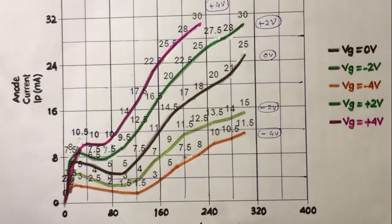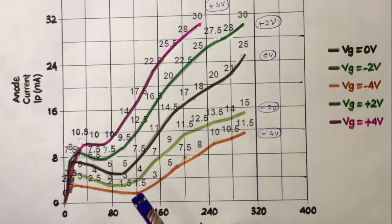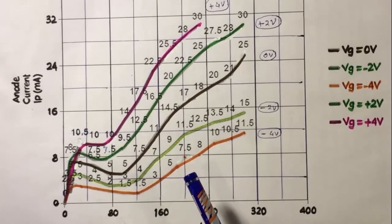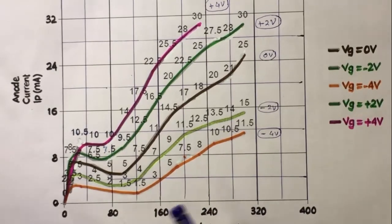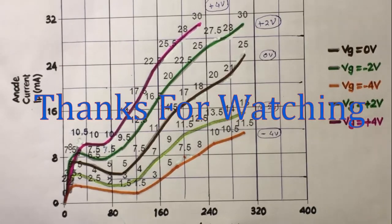We can see the characteristic curve of the tetrode valve with anode voltage on the x-axis and anode current on the y-axis. The pink curve shows the characteristic at VG equals to plus 4V, the green curve at VG equals to plus 2V, the brown curve at VG equals to 0V, the light green curve at VG equals to minus 2V, and the orange curve at VG equals to minus 4V. These curves are quite similar to the theoretical characteristic curves of the tetrode valve. Hence we conclude that our practical is correct. I hope you understand this experiment. If this video is helpful to you, please like, share and subscribe to our channel.